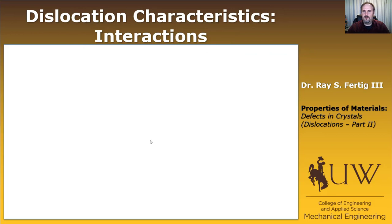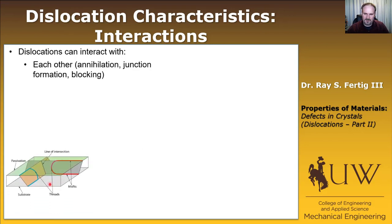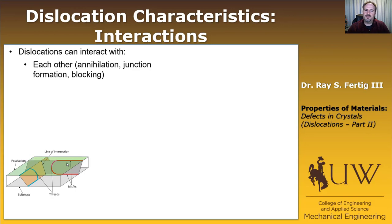So how do we stop dislocations? Dislocations interact with a variety of things. First, they can interact with each other — they can annihilate, form junctions, or block each other. Two dislocations coming together may join on a line of intersection and form a junction or block each other. To strengthen a material with this mechanism, we add more dislocations so they interact more often — that's what gives us strain hardening, where you initially yield and then the material gets stronger and stronger until it finally fails.